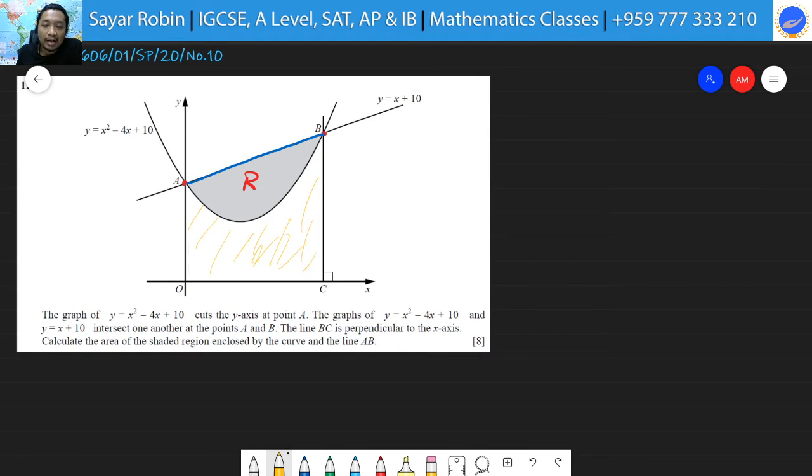First of all, we are going to find the upper limit and lower limit. Otherwise, we are not able to find the area exactly. We cannot give the answer in numerical value. That's why we need to find the upper limit and lower limit. We already know the lower limit because those two lines are intersecting at y-axis. Obviously, x value must be zero.